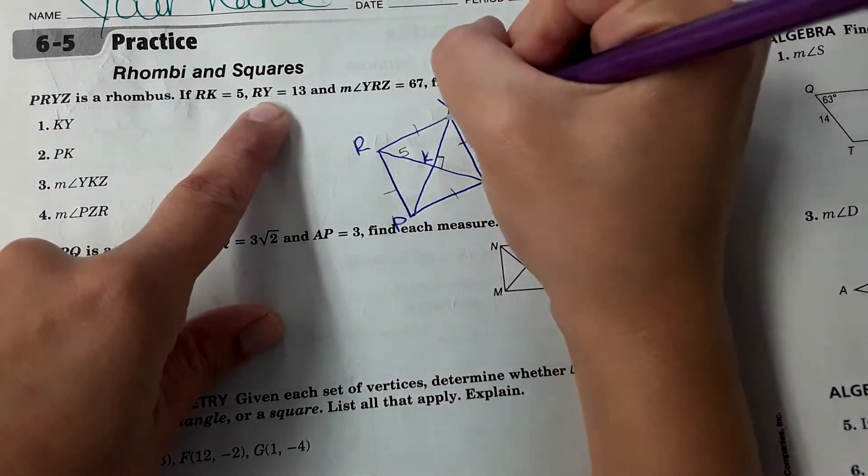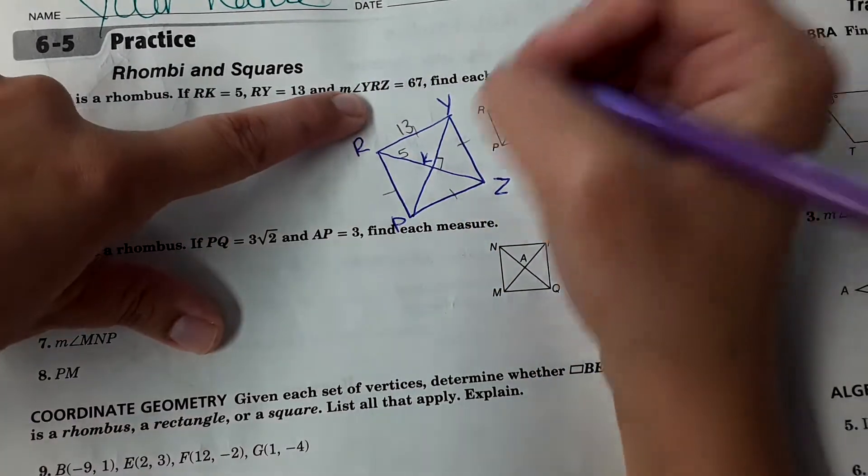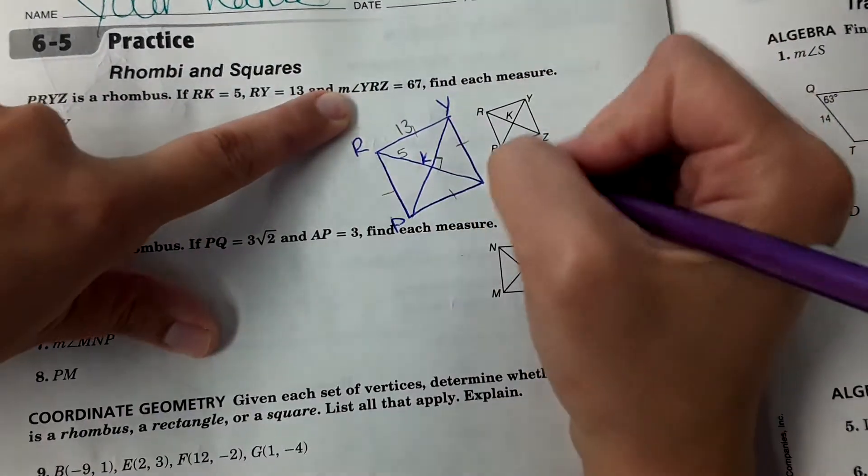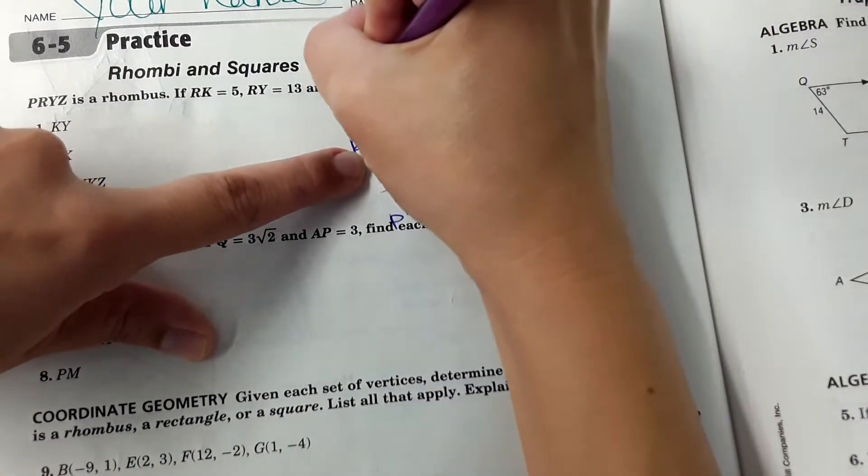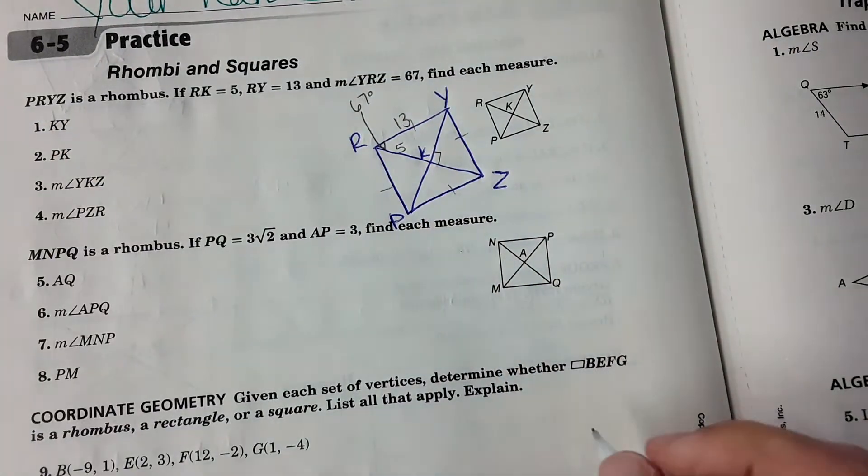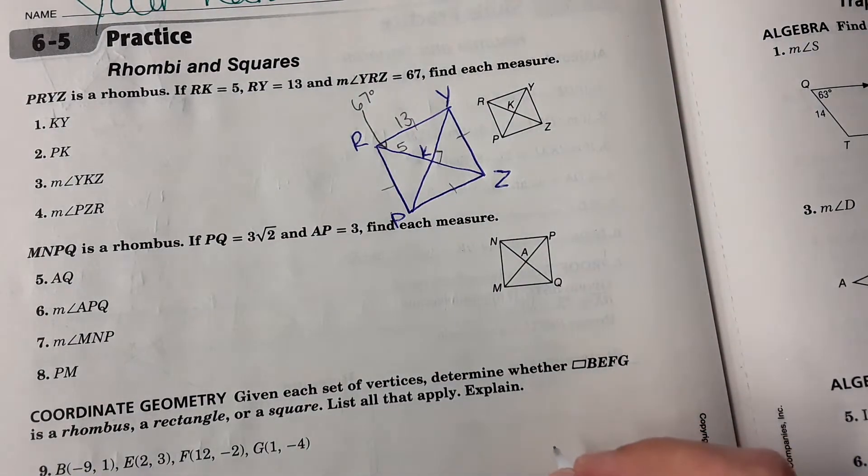It tells us that RK is 5, RY is 13 here, and the measure of YRZ is 67 degrees. Find each measure.